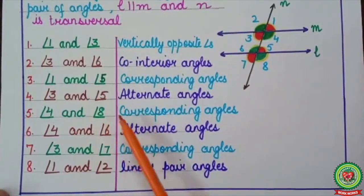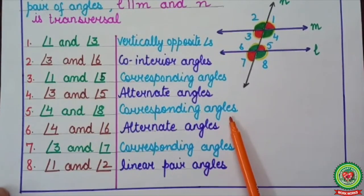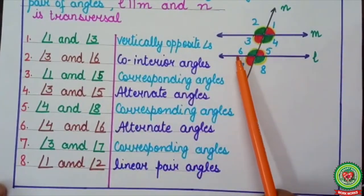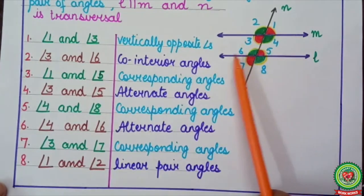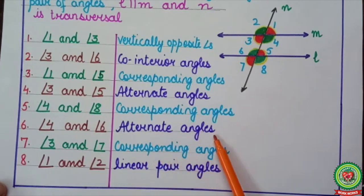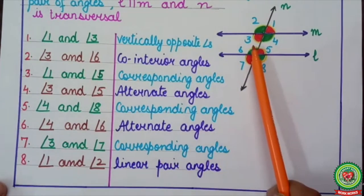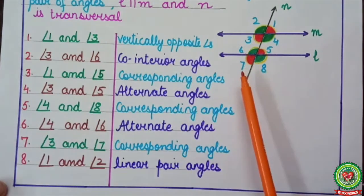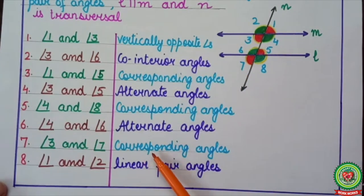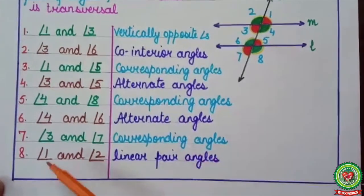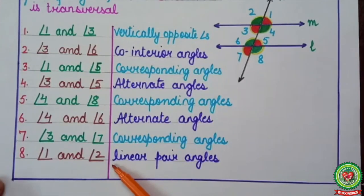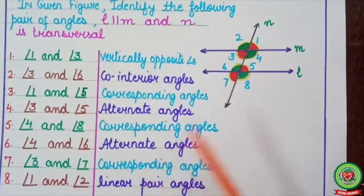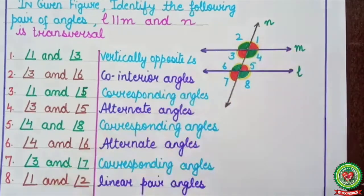Angle three and angle five are forming a Z shape, therefore these are alternate angles. Angle four and angle eight are forming an F shape, therefore these are corresponding angles. Angle four and angle six are forming a Z shape, so these two angles are alternate angles. Angle three and angle seven are forming an F shape with both below it, therefore these are corresponding angles. Angle one and angle two are adjacent angles on a straight line forming a T shape, therefore these two are linear pair angles.